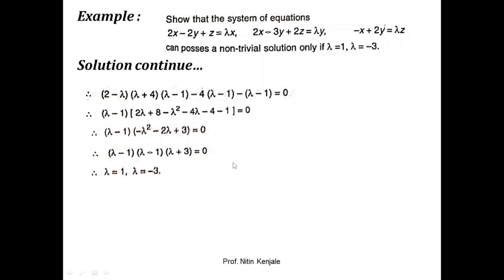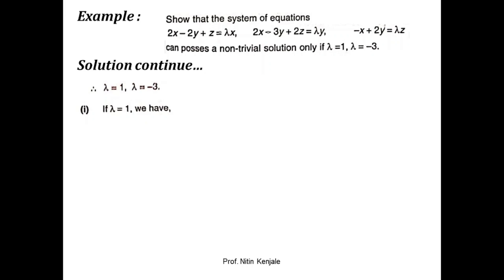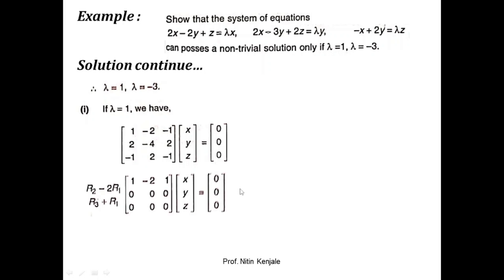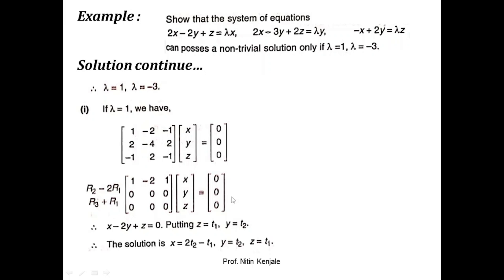Now let us extend our solution and find the non-trivial solutions at lambda = 1 and lambda = -3. We substitute lambda = 1 in the equation Ax = 0, obtaining a new matrix representation. We reduce this matrix A to row echelon form using the required transformations. From the row echelon form we get one equation: x - 2y + z = 0. We assign z = t1 and y = t2 as random values, giving x = 2t2 - t1. Therefore, the solution at lambda = 1 is (2t2 - t1, t2, t1).